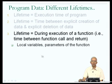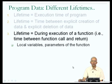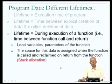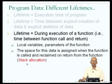Both local variables and parameters could be allocated in this way. When the program runs, the space for local variables and parameters could be allocated just before the function is called and could be reclaimed when the function returns. Space for this kind of data is assigned on something called the stack, and therefore this kind of allocation is known as stack allocation.